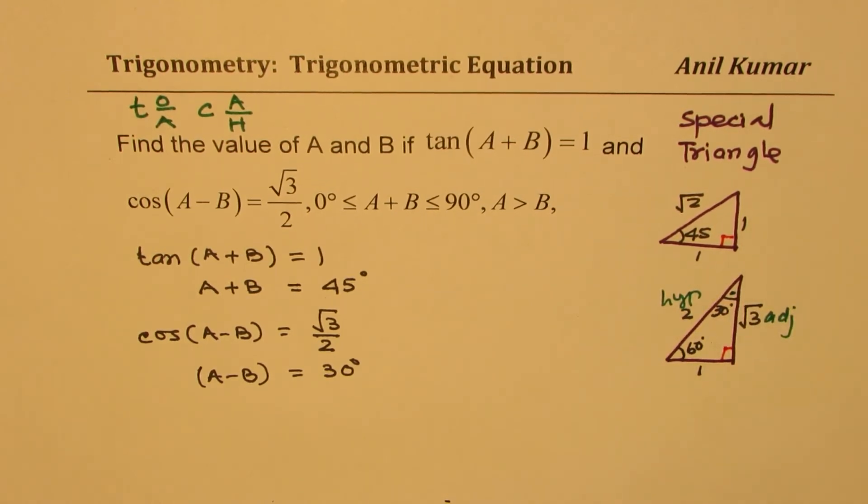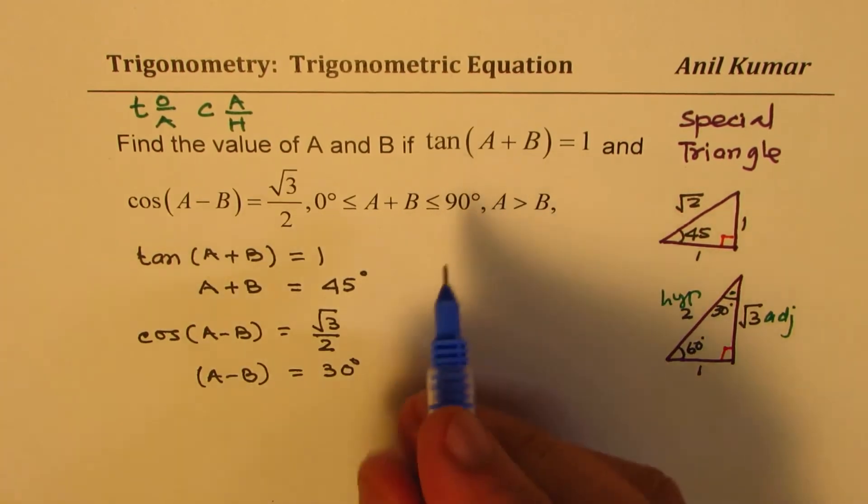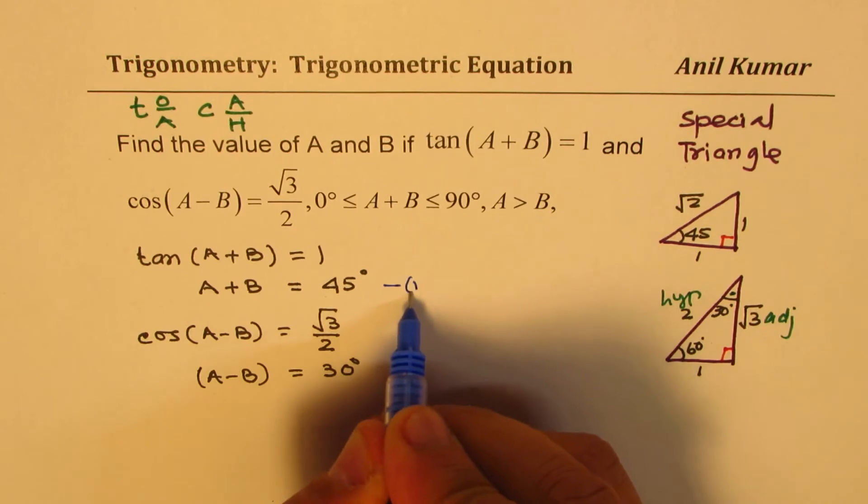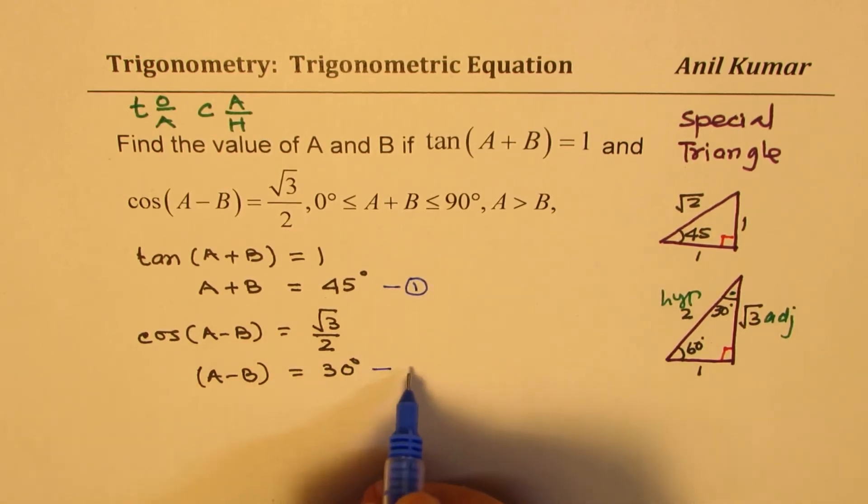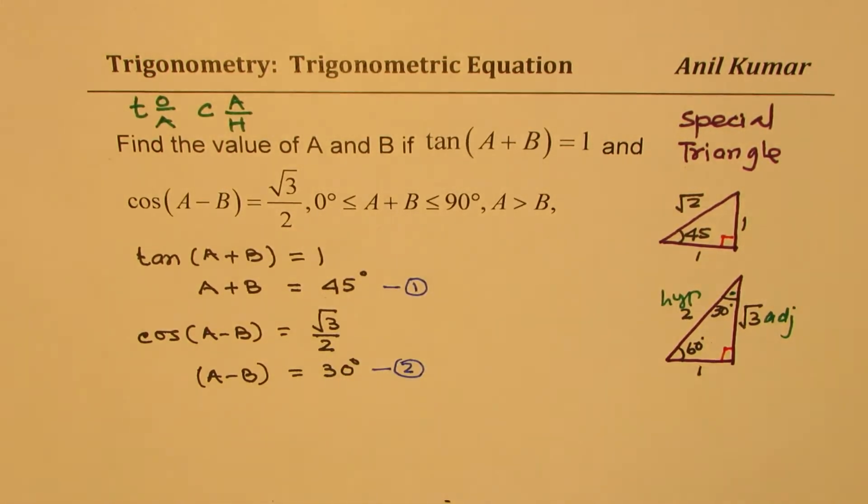Now basically, that gives you two equations to work with. One: A+B = 45. And the second one: A-B = 30.